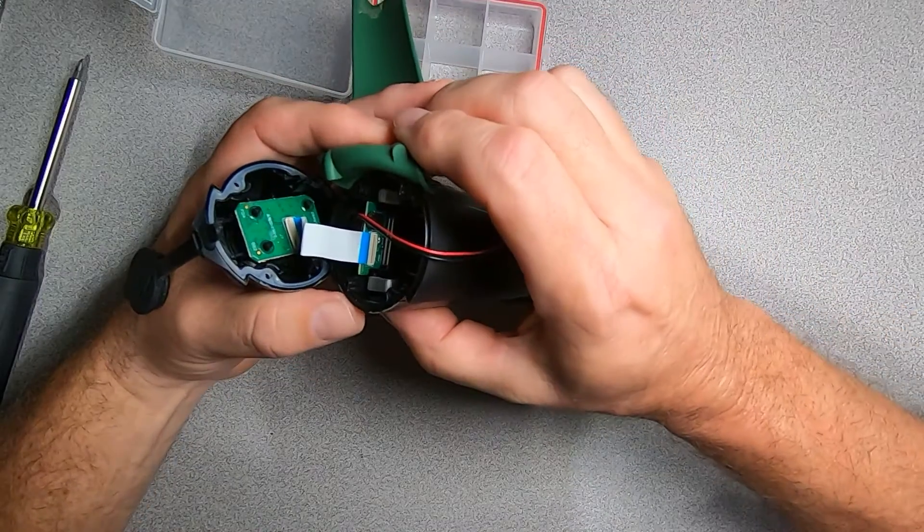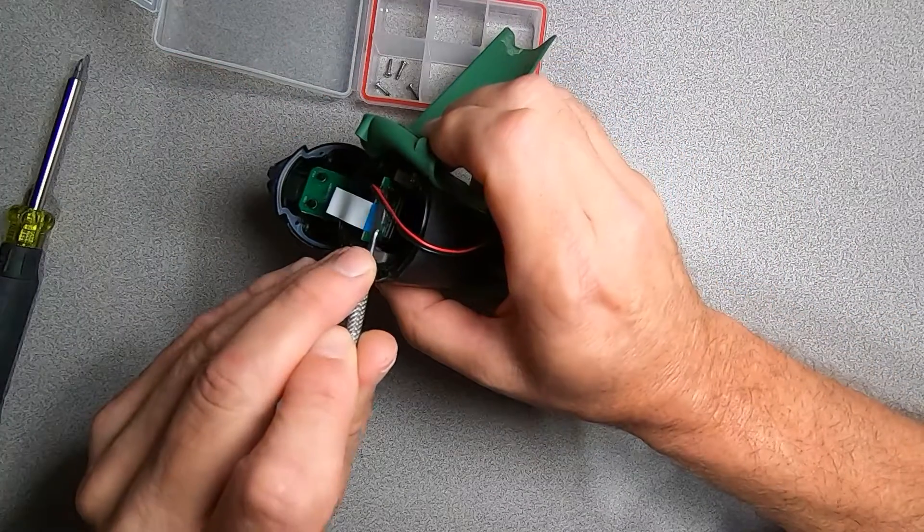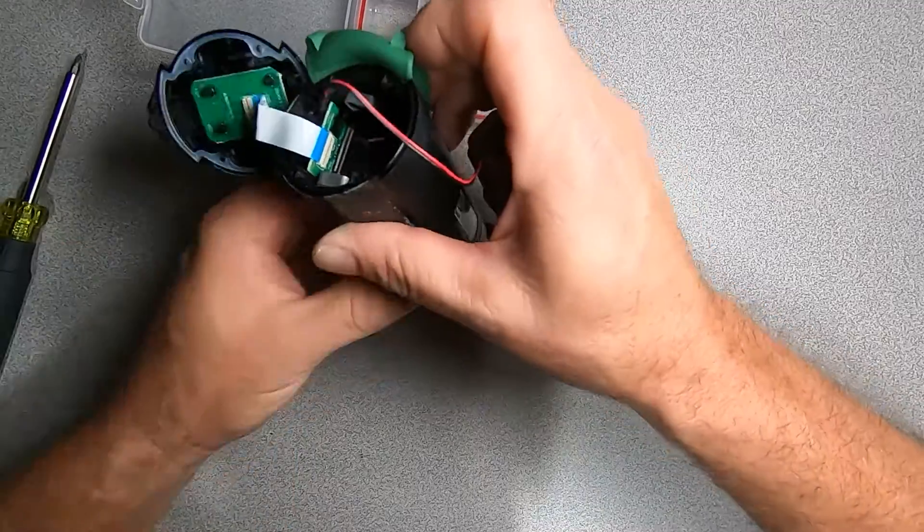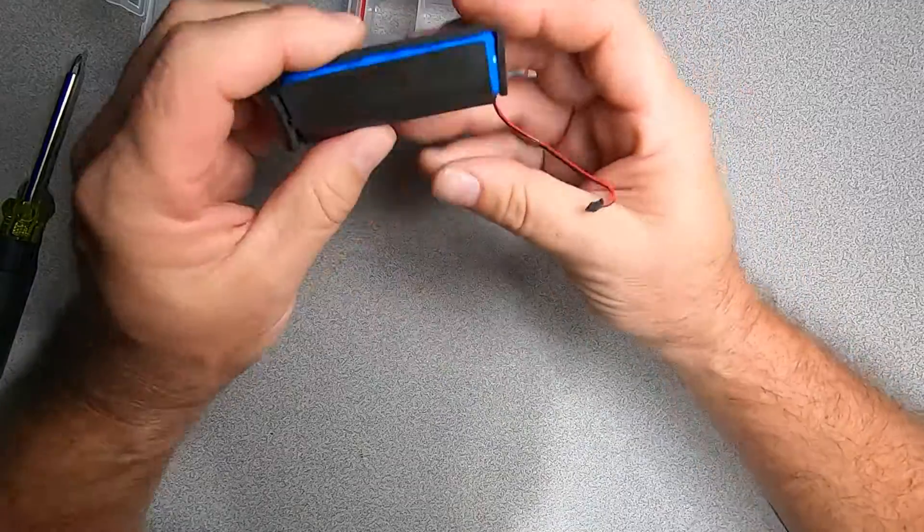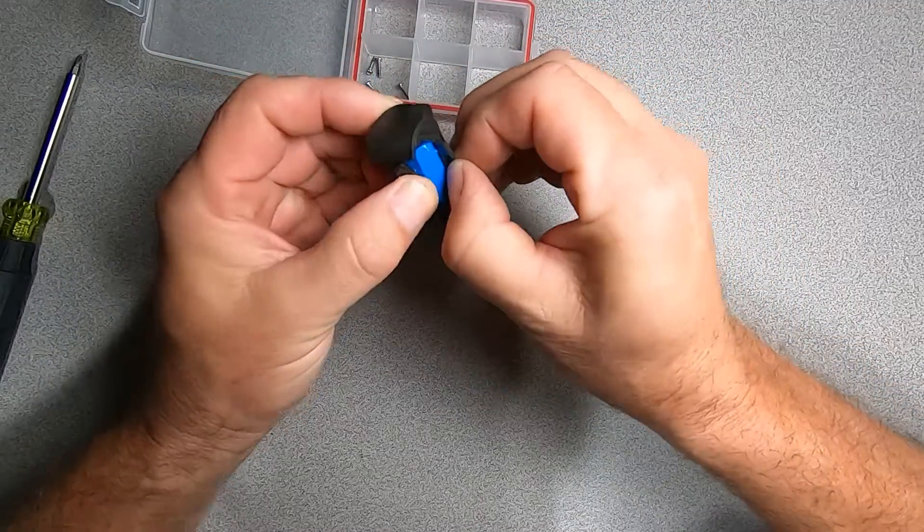You can see how our battery is inside, and you can see we've got a seal here. Let's go ahead and see if we can get our battery out. Here we go, and there's our battery. You can see we've got a small connector in here, and now our battery is disconnected.